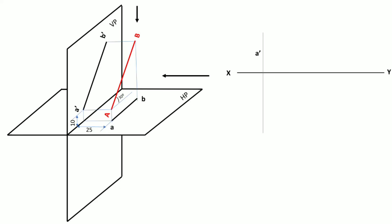With respect to the XY line, we mark point A-dash at 10 mm above XY and point A at 25 mm below XY. Once we have both these points, it is time to draw the actual line A-dash B-dash. We know A-dash B-dash is of true length. The angle this line makes will be the same as the actual line makes with the horizontal plane, that is 30 degrees.